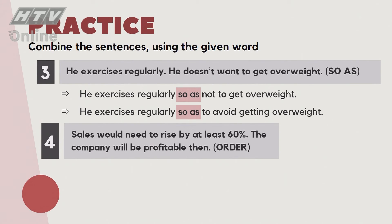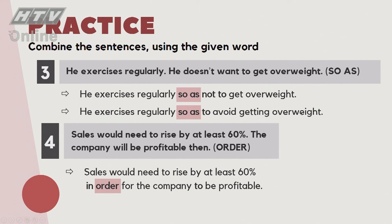Câu số 4: 'Sales would need to rise by at least 60%. The company will be profitable.' Dùng 'in order to'. Nếu viết 'in order to be profitable' thì không đúng, vì chủ ngữ của hai mệnh đề khác nhau. Phải dùng: 'Sales would need to rise by at least 60% in order for the company to be profitable.' Lưu ý cấu trúc 'in order for + noun/pronoun + to + verb.'